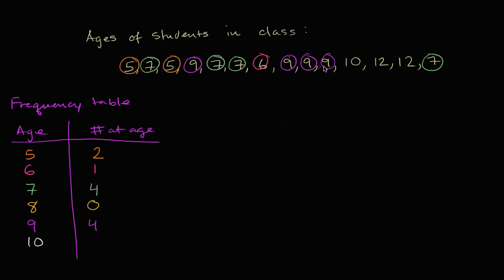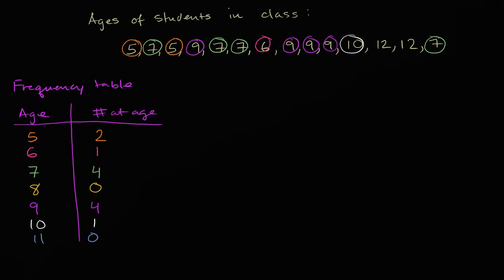Ten-year-olds — we have one ten-year-old right over there. And then eleven-year-olds — there are no eleven-year-olds. And then finally, twelve-year-olds — there are two twelve-year-olds. So what we have just constructed is a frequency table. You can see for each age how many students are at that age. You could take this table and reconstruct the original list: two fives, one six, four sevens, no eights, four nines, one ten, no elevens, and two twelves.